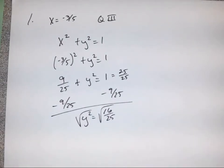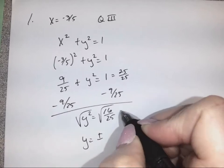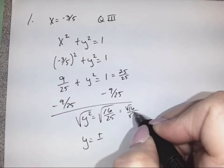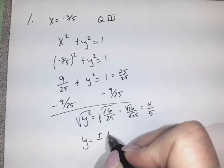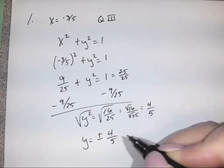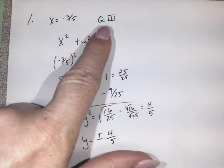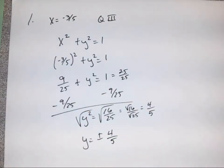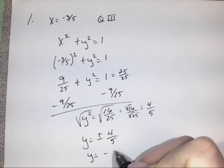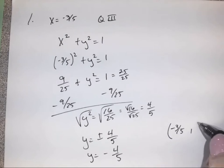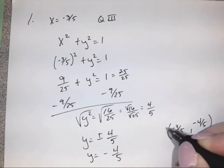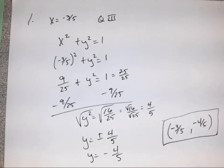We'll take the square root of both sides, so we end up with plus or minus. Remember, this will be the square root of 16 over the square root of 25. Square root of 16 is 4, square root of 25 is 5, so plus or minus 4 over 5. Now, is it positive or negative? We're in quadrant 3, so that tells us it will be negative. So Y equals negative 4 over 5. That is your final answer — make sure you put it in point format, because we're asked to find the point.